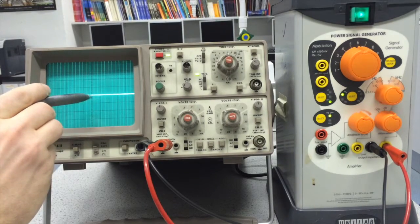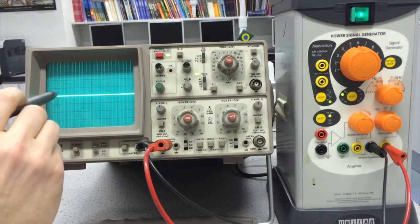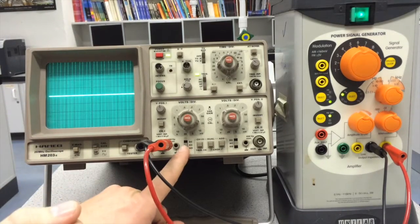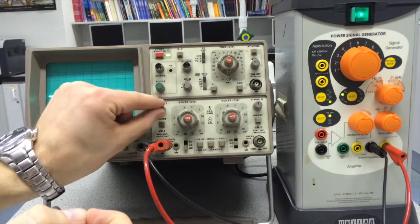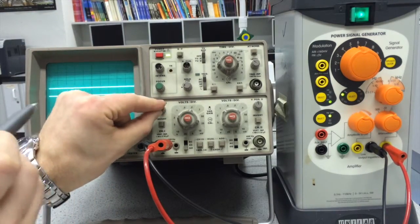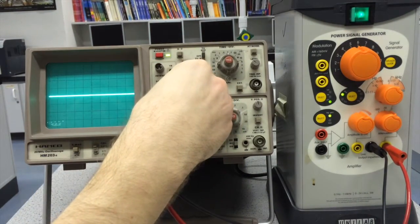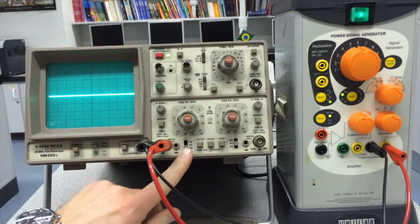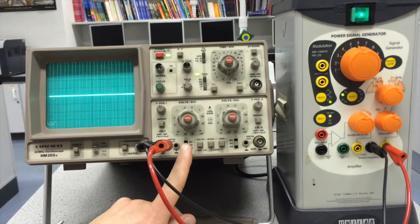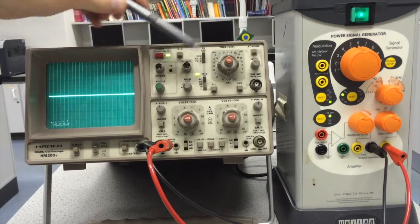If I want to make sure that this signal that I'll be measuring is vertically aligned, I can flick this switch down here to the ground. Now both signals are grounded so now you can see this first signal in the first channel is just a horizontal line and I can line that up with the middle, so that's lined up now. I'll go back to AC for my signal.